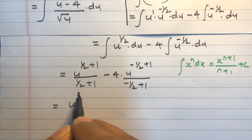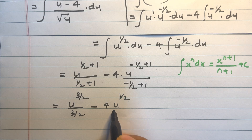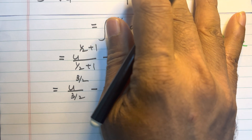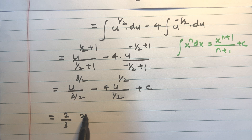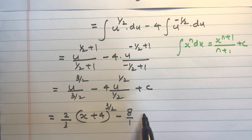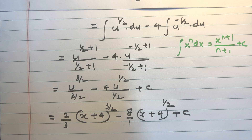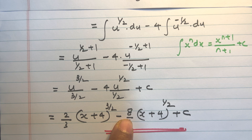Simplifying: u raised to 3/2 divided by 3/2 gives 2/3 (taking the reciprocal of 3/2). Substituting u equals x plus 4, the result is 2/3 into (x plus 4) all raised to 3/2 minus 4 into 2, which is 8, into (x plus 4) all raised to 1/2 plus c. The final answer is (2/3)(x+4)^(3/2) minus 8(x+4)^(1/2) plus c.